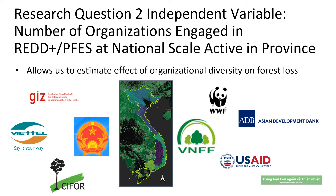We went through organizations' websites and looked at the projects and activities they listed to figure out what provinces they were active in. There is some uncertainty about when exactly each organization was active where, but despite that uncertainty, we still find some interesting results. The basic idea is that if we look at the organizations active in forest issues showing up in each province, that allows us to estimate how organizational diversity is affecting forest loss, with the expectation that a more diverse group of organizations in a given province is going to help stem forest loss.